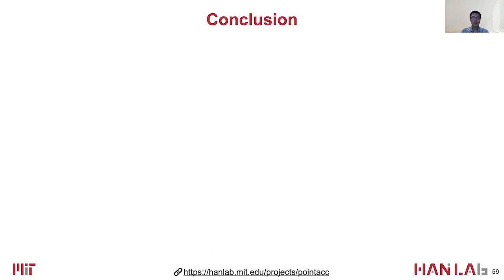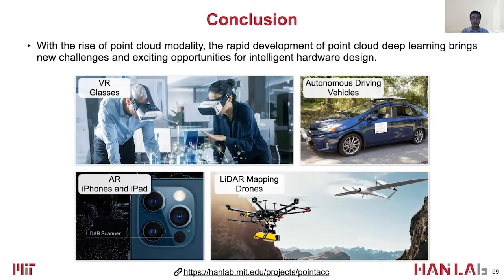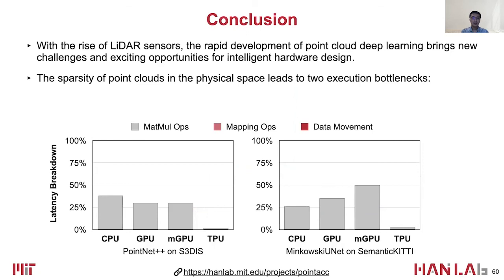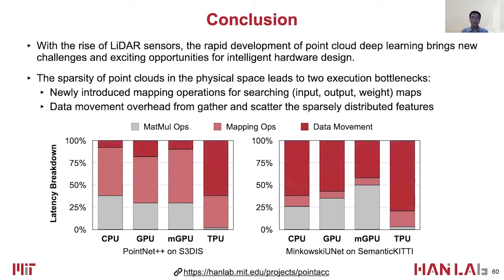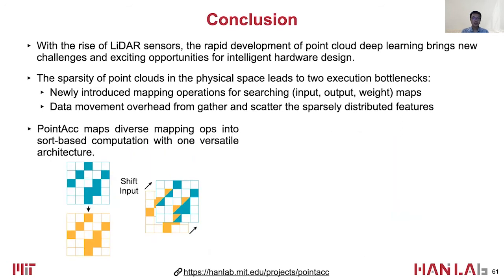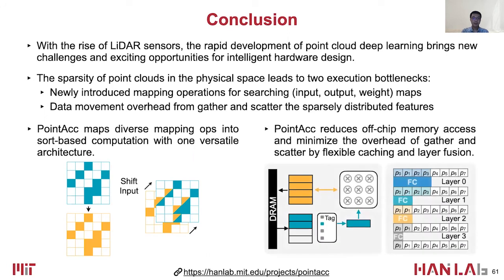In summary, with the rise of point cloud modality, the rapid development of point cloud deep learning brings new challenges and exciting opportunities for intelligent hardware design. The sparsity of point cloud leads to two challenges: newly introduced mapping operations for searching input, output, and weight maps, and the explicit data movement from gathering and scattering the sparsely distributed features. Our Point Tech addresses these challenges by converting diverse mapping operations into sort-based computation with one versatile architecture, and reducing memory footprint by flexible caching and layer fusion. Point Tech paves the way for efficient point cloud recognition.